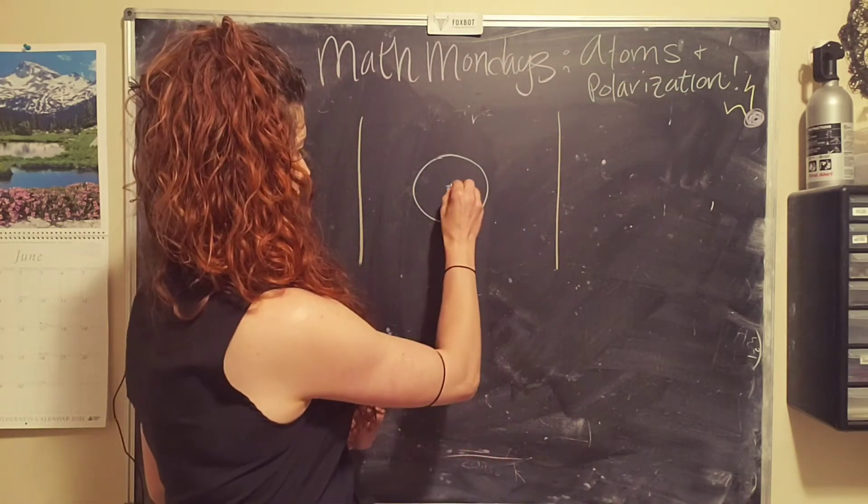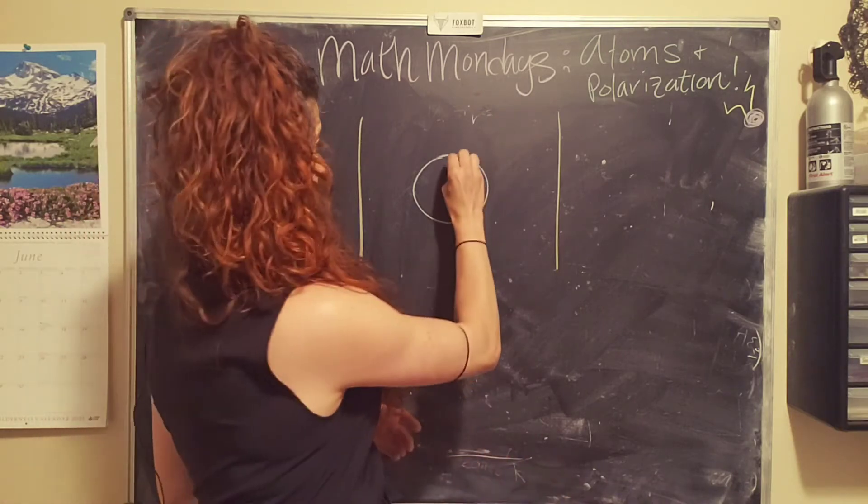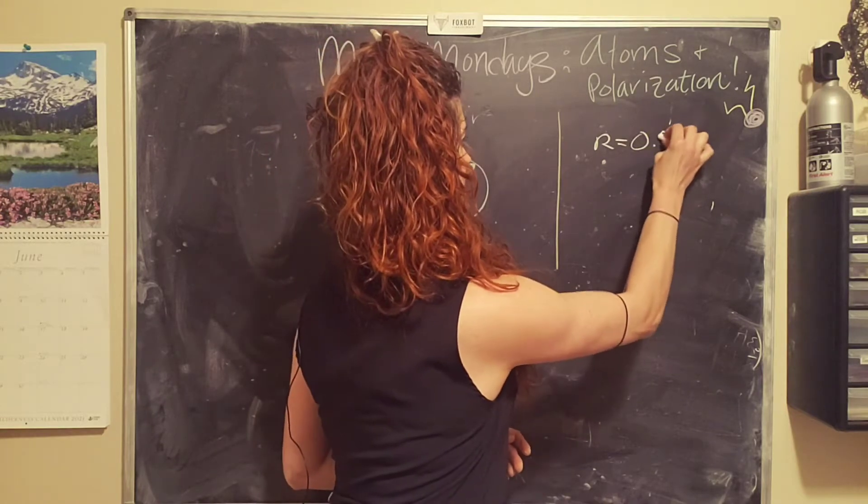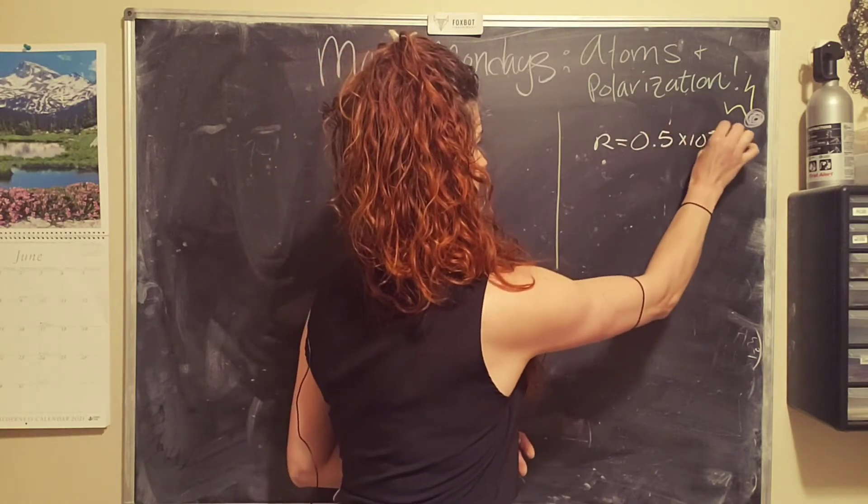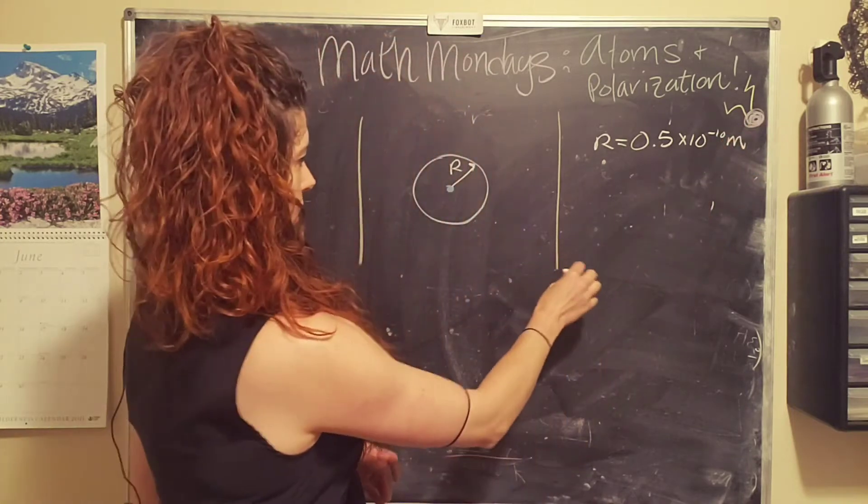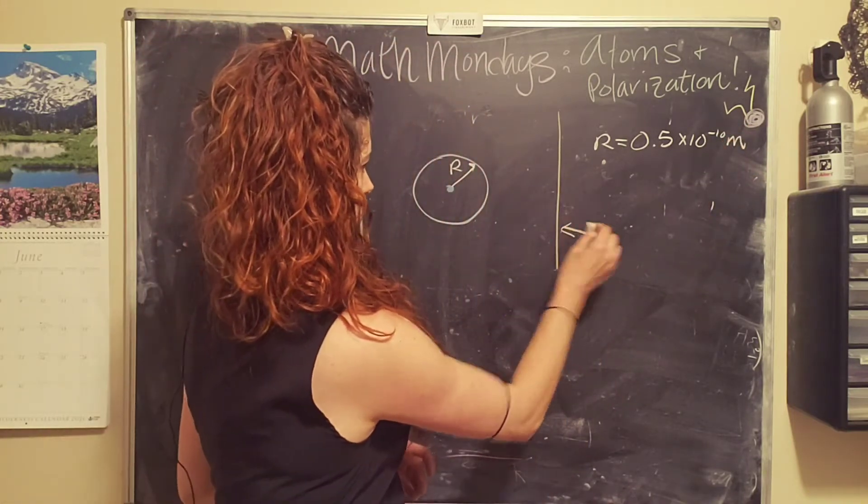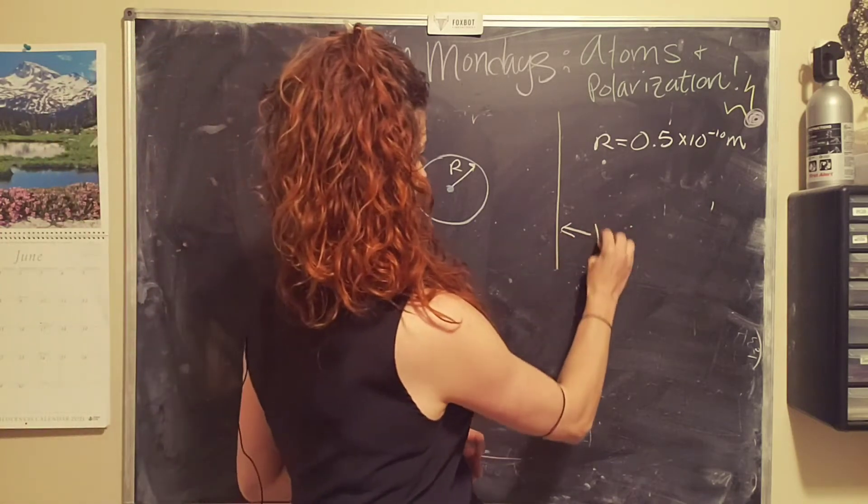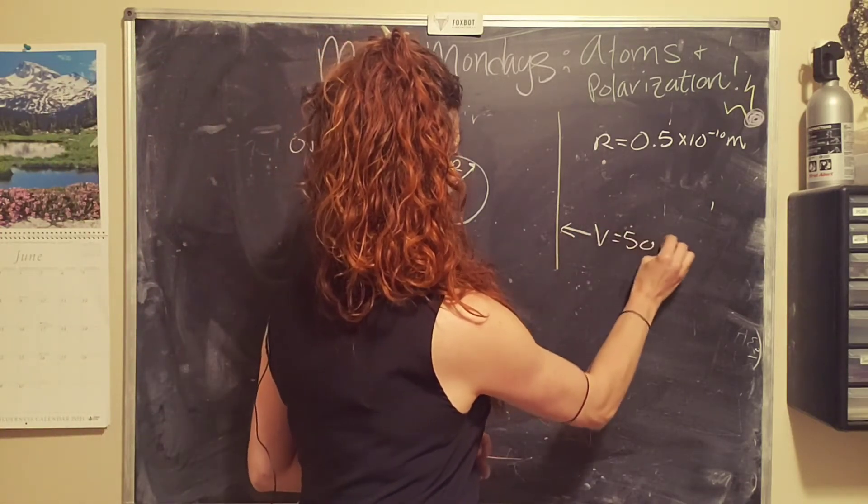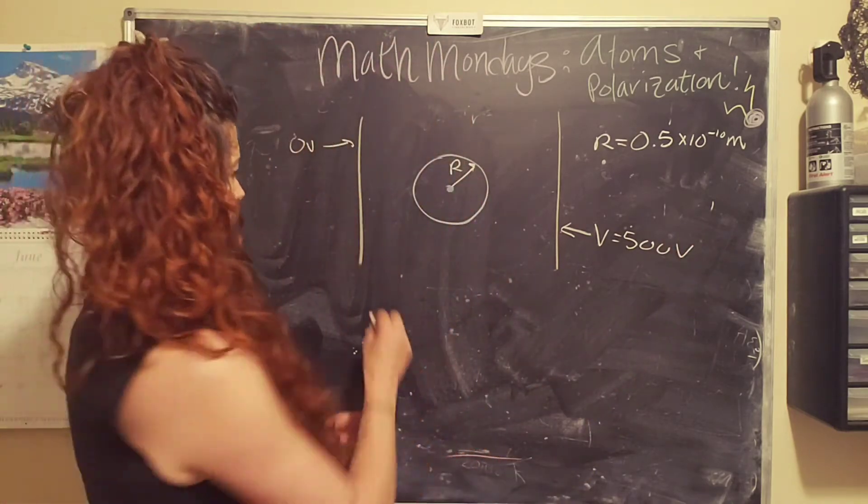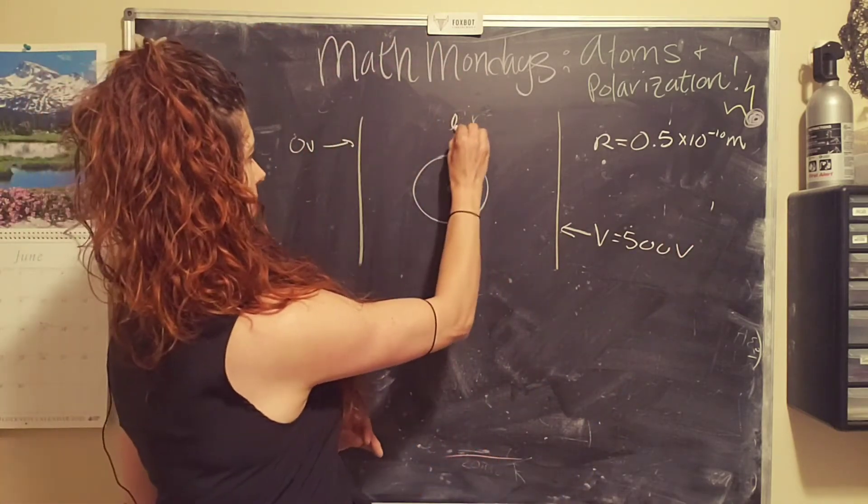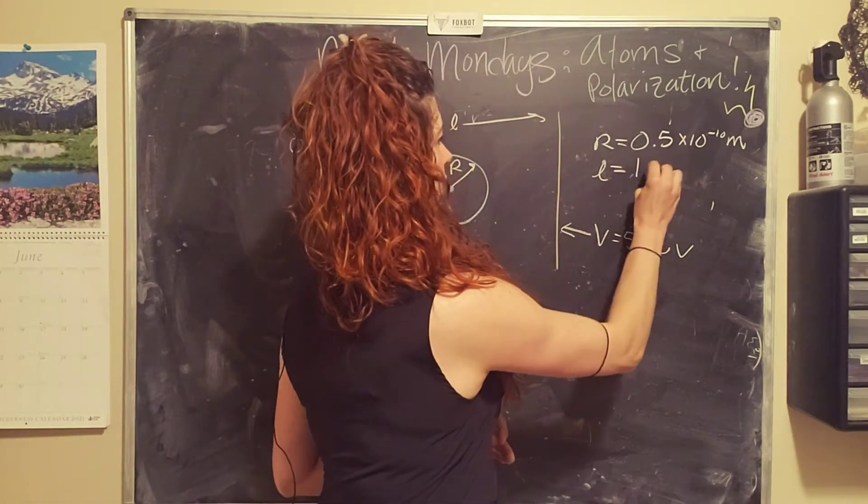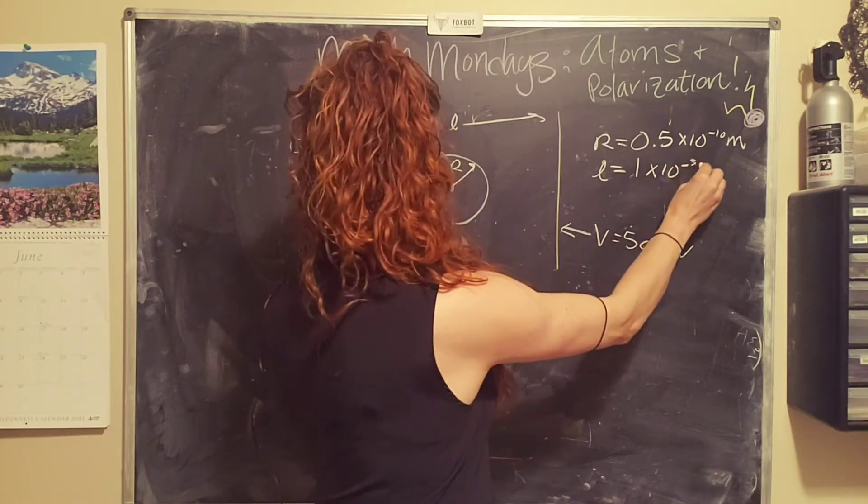So let's first record the information that was given to us in our problem. We know that our atom has a Bohr radius of r, where r equals half an angstrom, 0.5 times 10 to the negative 10 meters. We know that this voltage here, if we assume that this can be zero volts, we'll say that this is 500 volts.